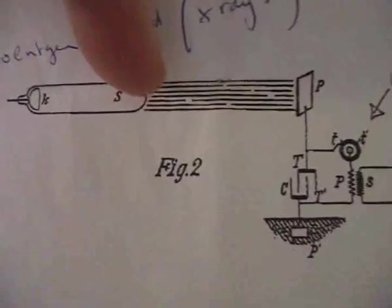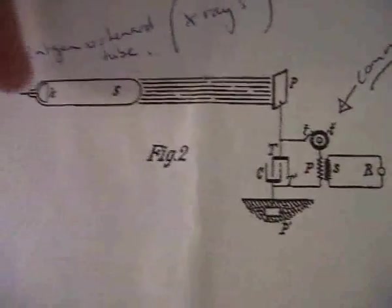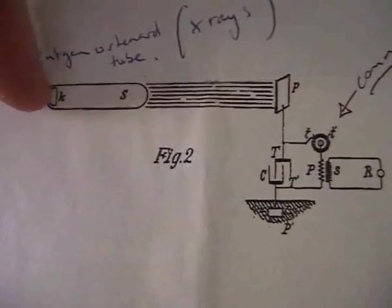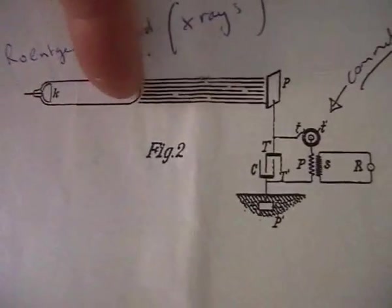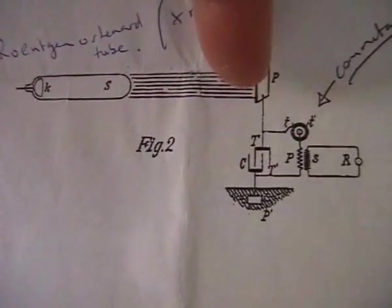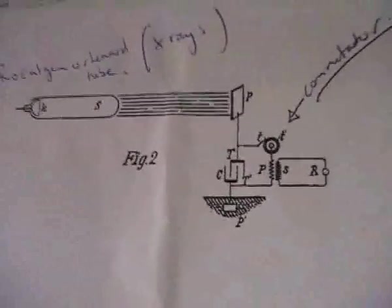Yeah, I forgot to mention the radiant matter here travels in straight lines. Okay, so from the plate here, travels in straight lines, hits the plate. Very important.